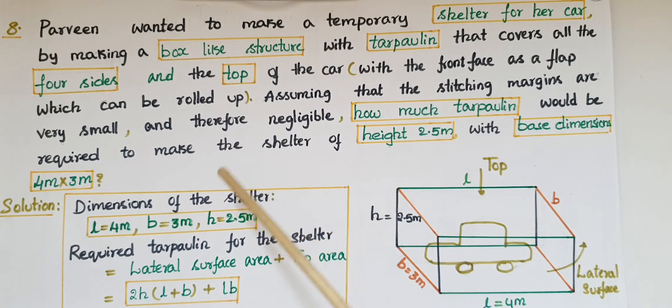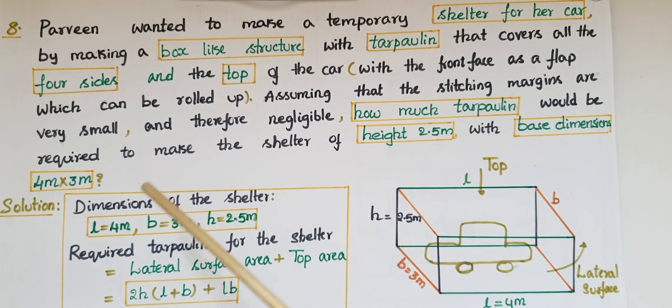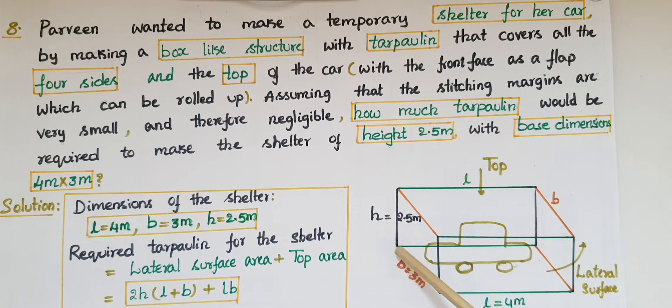And how much tarpaulin would be required to make the shelter of height 2.5 meters with base dimensions 4 meters into 3 meters. So here we have to find how much tarpaulin is required if the height of the structure is 2.5 meters and base dimensions breadth is 3 meters and length is 4 meters.